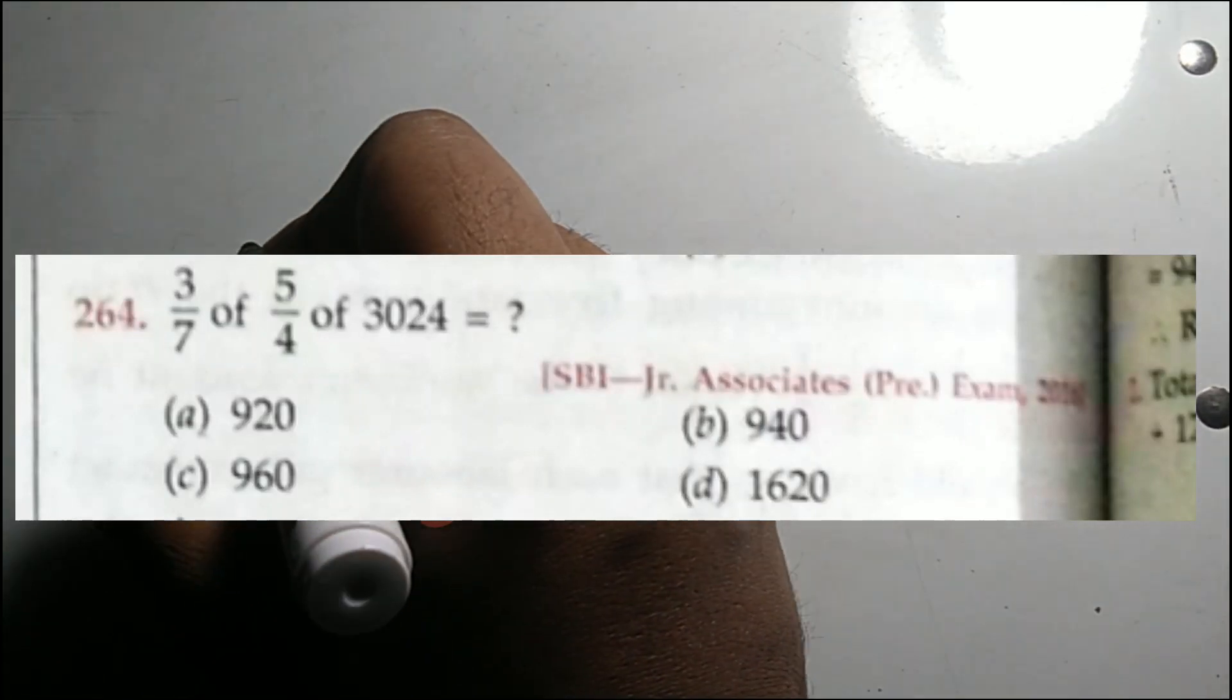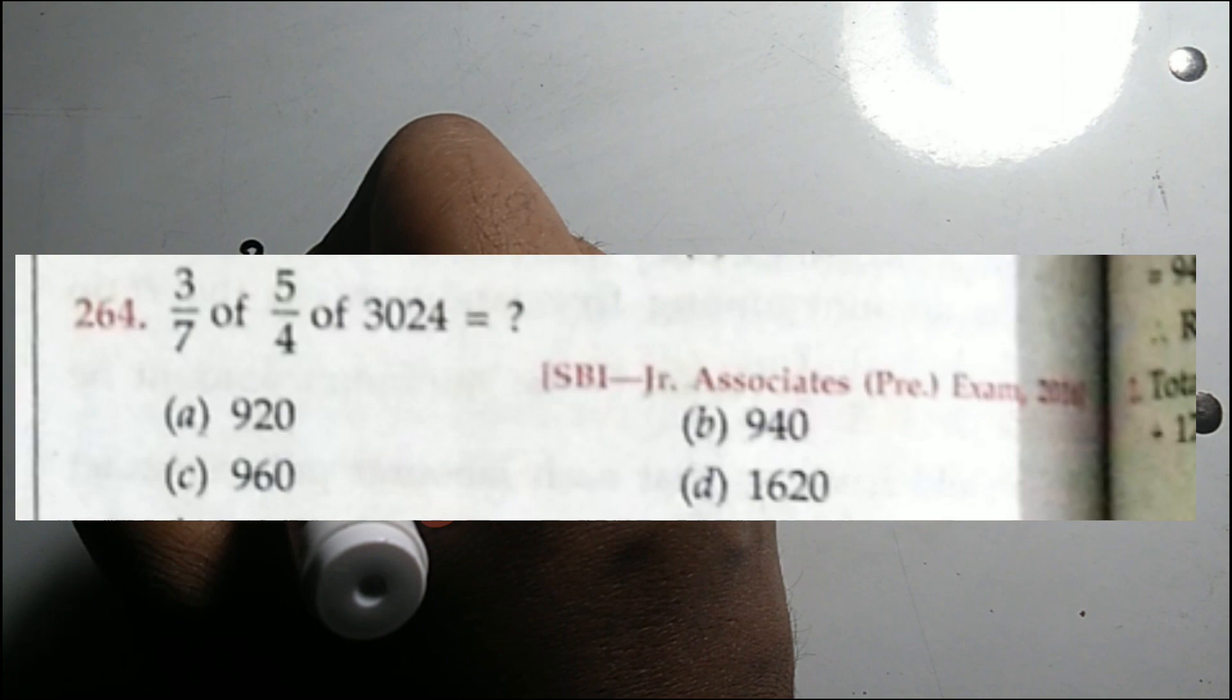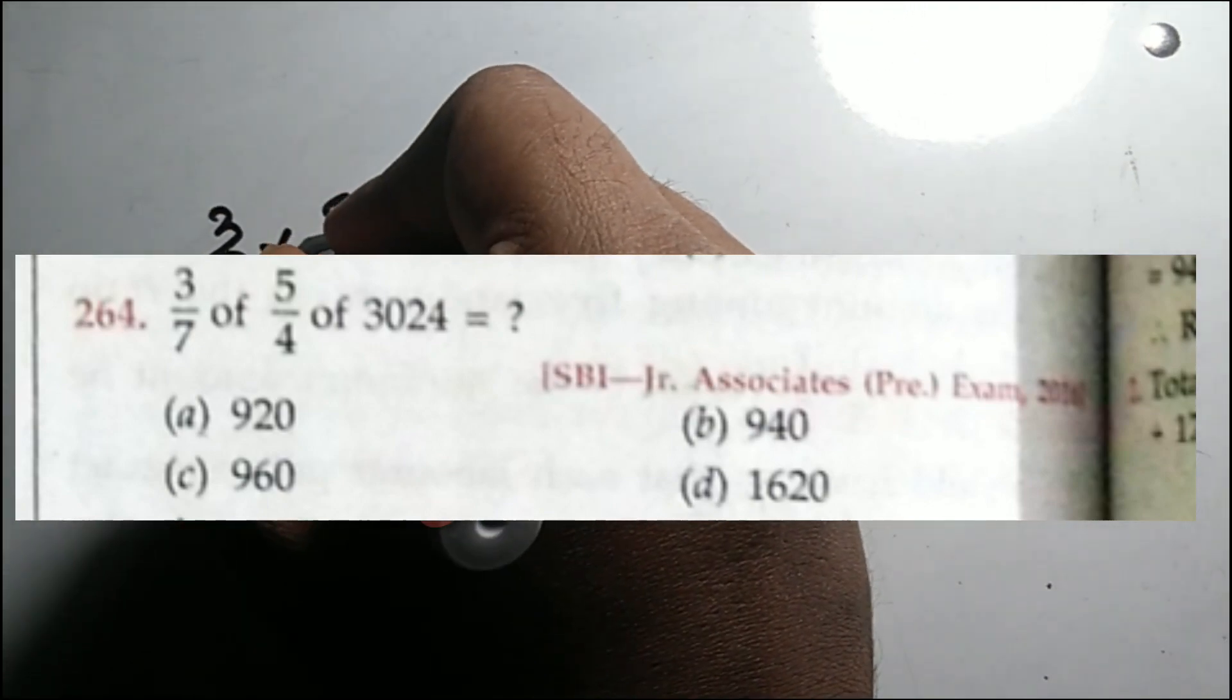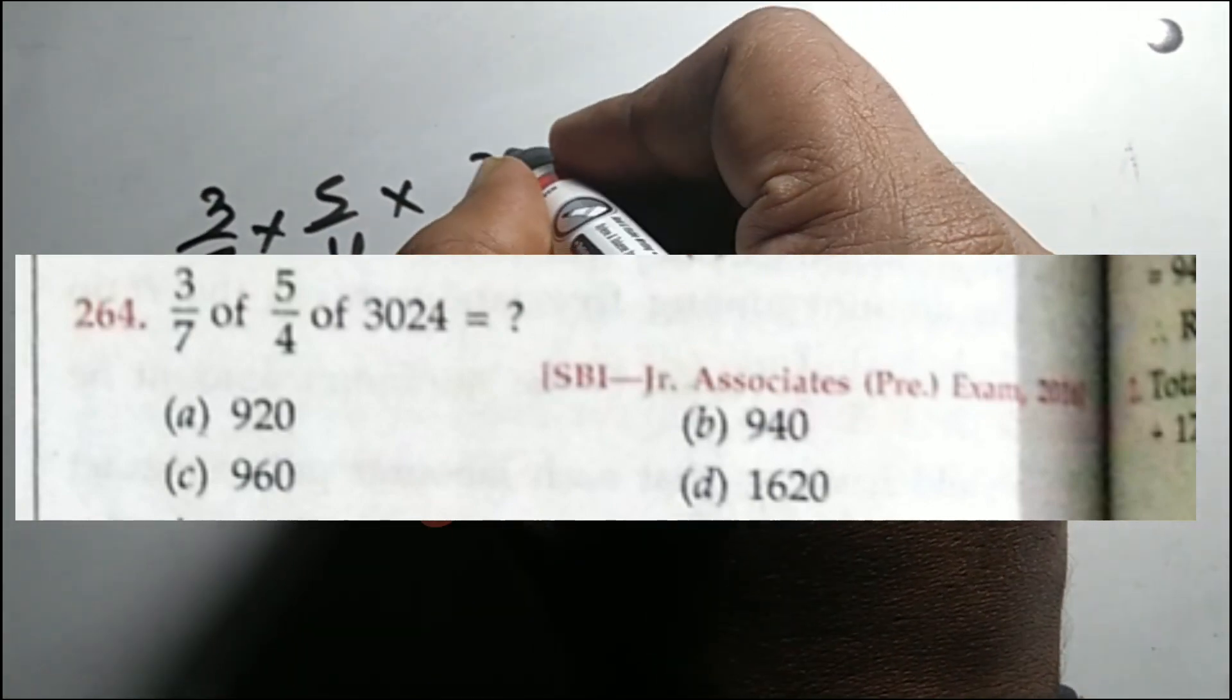Question number 264: 3/7 of 5/4 of 3024 equals what?